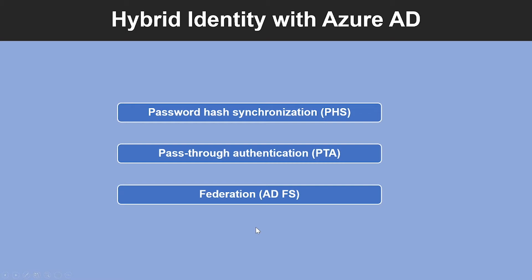The third option is Federation with Azure AD. You can federate your on-premises environment with Azure AD and use this federation for authentication and authorization. This sign-in method ensures that all users' authentication occurs on-premises. This method allows administrators to implement more rigorous levels of access control.